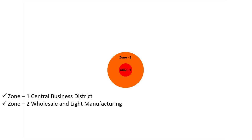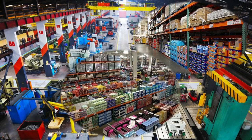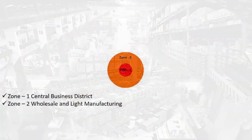Zone Two: Wholesale and Light Manufacturing Zone. This zone is adjacent to the CBD. Here, light manufacturing and household industries are generally established. Surplus from the other zones are generally distributed from here, as this zone also performs the work of wholesale trading.